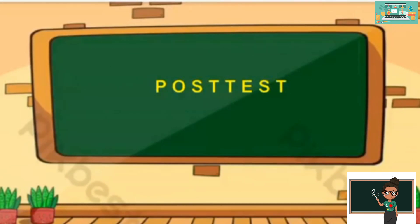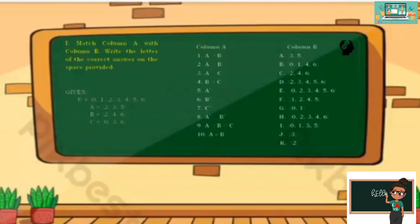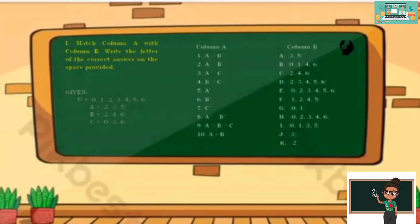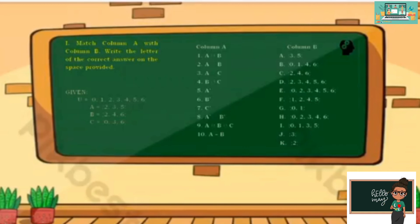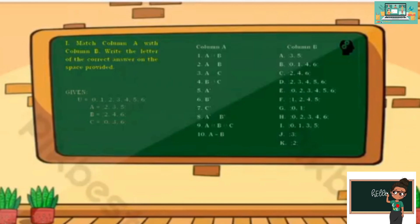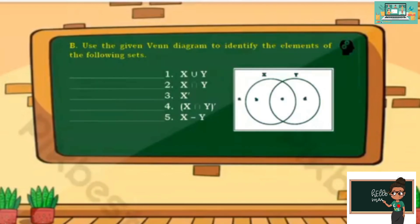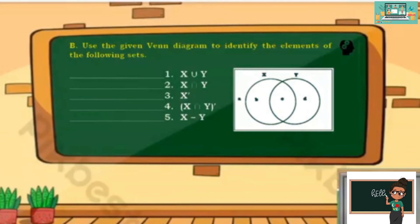For test 1, match column A with column B — write the letter of the correct answer on the space provided. Given the universal set {0, 1, 2, 3, 4, 5, 6}, set A with elements {2, 3, 5}, set B with elements {2, 4, 6}, and set C with elements {0, 3, 6}. For test 2, use the given Venn diagram to identify the elements of the following sets. I hope you learned something today. Thank you and God bless.